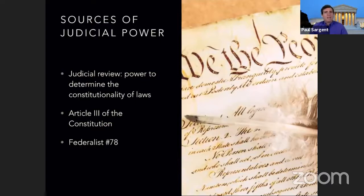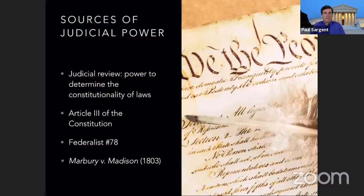There's another source of judicial power — not a formal one, but it comes from Federalist No. 78, which is one of the College Board's required foundational documents. We'll talk about that in a few minutes. And another source of judicial power comes from the Supreme Court's own decision in Marbury v. Madison, 1803. We'll talk about that shortly as well.